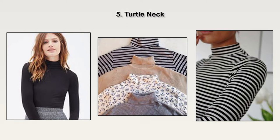The turtleneck is another variation of the crew neck that extends one inch higher. A similar look achieved in a woven garment is called a band collar. Like the basic crew neck, it is sometimes made with a rib fabric or with the same fabric as the body. You can see a few examples of the turtleneck here.